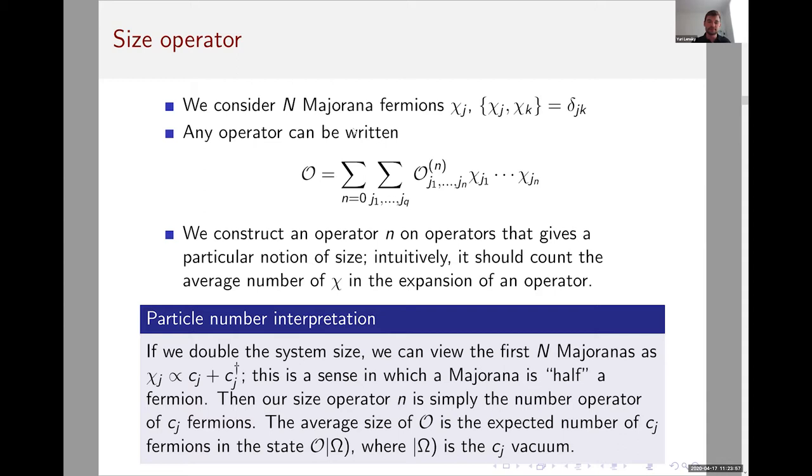There's a particle number interpretation of our number operator. If you double the system size, you can pair up the Majoranas and make complex fermions. Then you can take the first N Majoranas and make them sums of creation and annihilation operators of the fermions you made. Then our size operator is actually the number operator or is isomorphic to the number operator of these C_j fermions. So the way you compute the average size of O is you end up just counting the number of chi-j's in this expansion. You take the vacuum of the C_j fermions and you act with O written only in terms of the first N Majoranas on that vacuum state. And you just measure the expected number of fermions in that state. That's the average size of O.